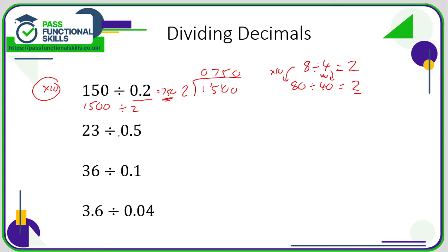So 23 divided by 0.5. Let's multiply both numbers by 10, so that's 230 divided by 5. And now it's just easy bus stop. 0 carry the 2, 4 carry the 3, 6. 46.